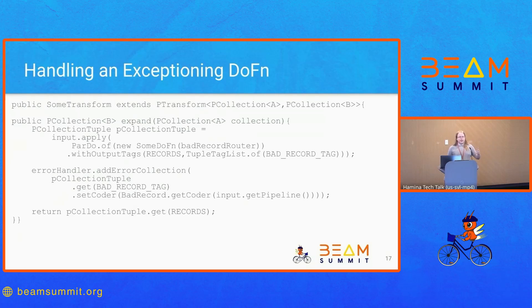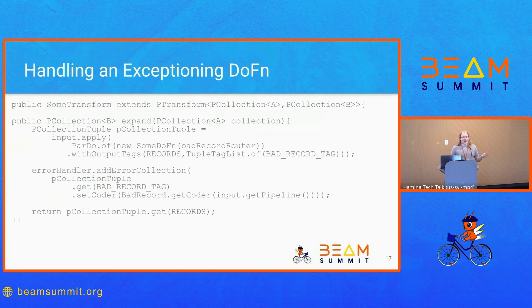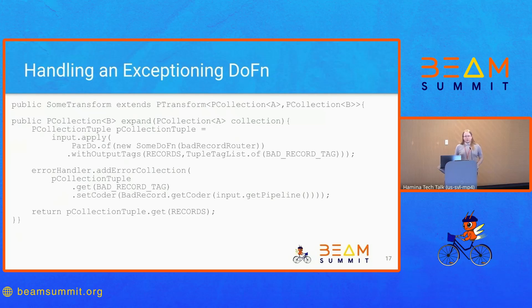In the PTransform itself, you'll need to take the collection of errors and hand it to the error handler. Your DoFn can emit both a main records tag and a bad record tag. You then tell the error handler that the user configured to add the bad record tag collection — you do have to manually set the coder, despite it always being the same, due to the Java SDK being verbose. You then return just the good records collection. This makes it easy for people to chain operations, send bad records to the configured error handler, and not have to think too hard about managing exceptions.